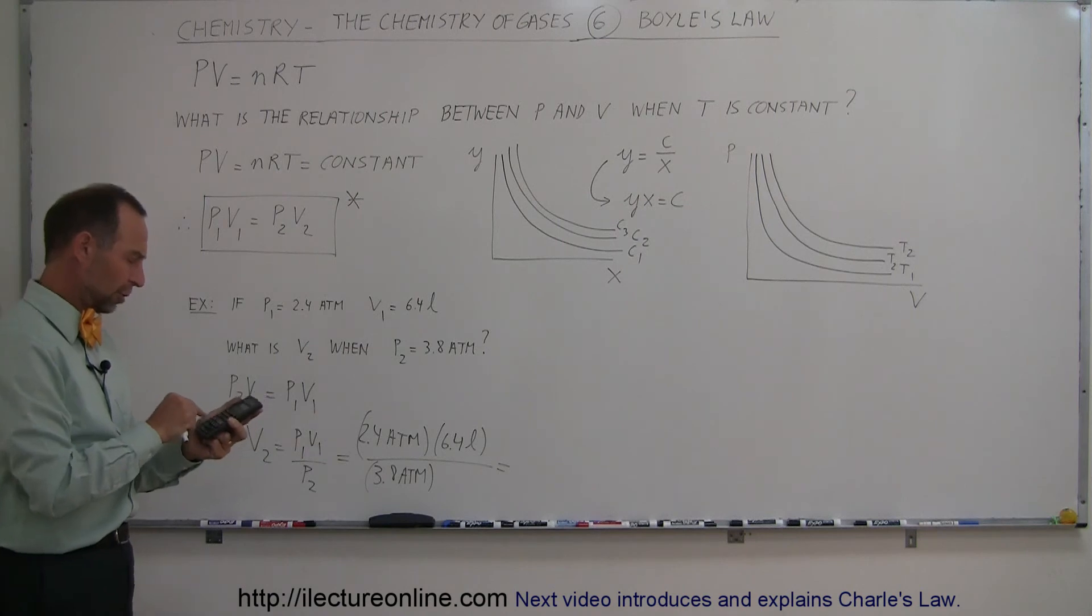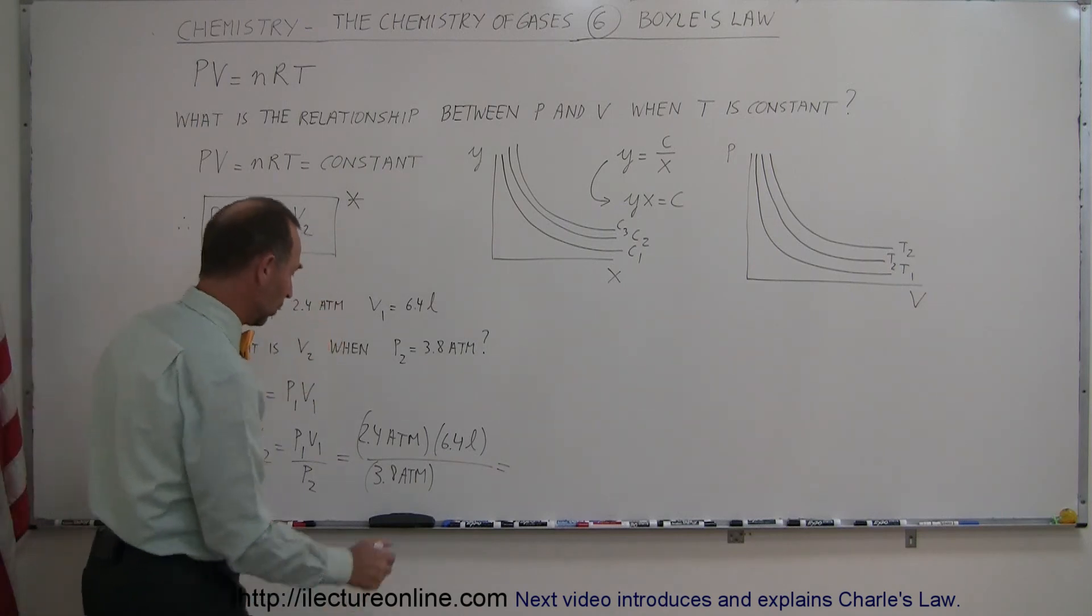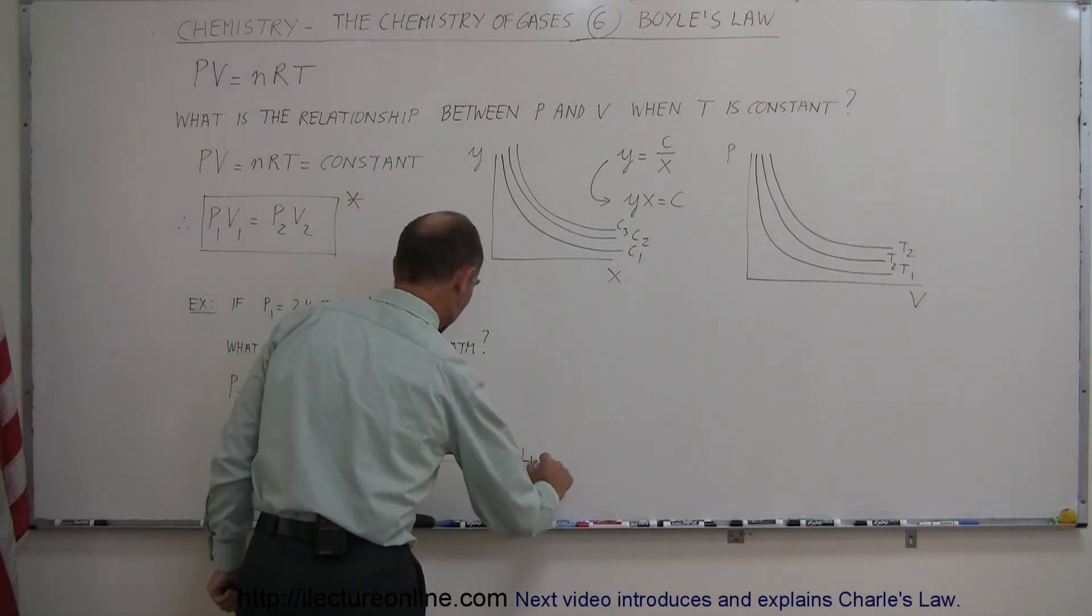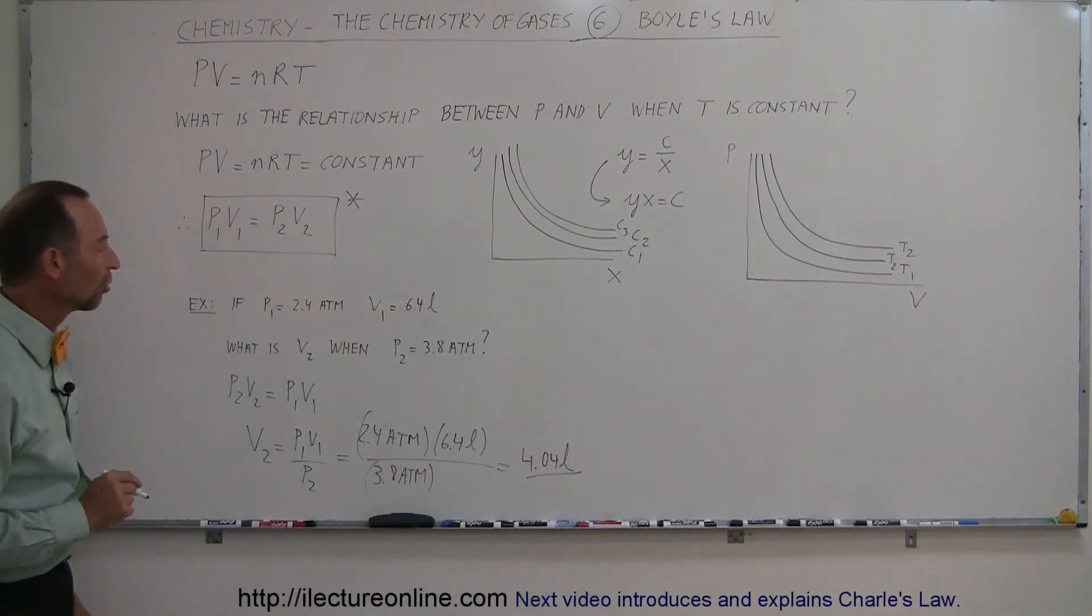So we have 2.4 times 6.4 divided by 3.8 and we get 4.04. So 4.04 liters. And that would be the new volume under the additional pressure.